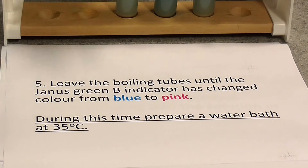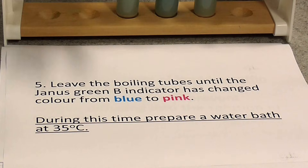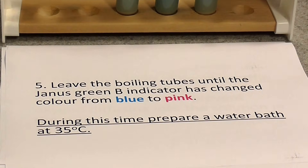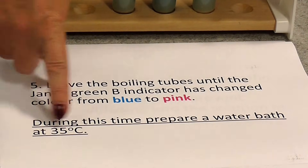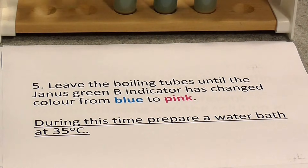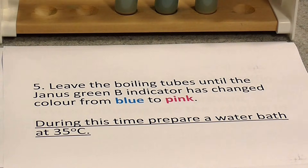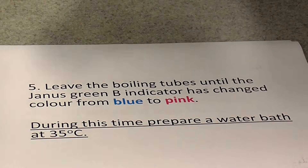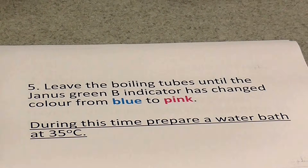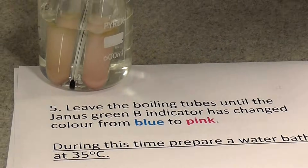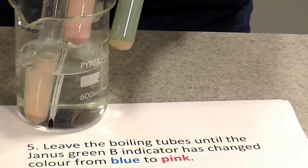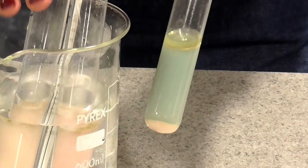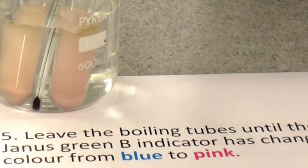This will take quite a bit of time, but you can speed it up by putting the tubes in a water bath at 35 degrees if you already have one prepared. I've actually done this step earlier, and after a period of time you'll see the colour change. You can see the Janus Green indicator has changed to pink, showing that we've got anaerobic conditions in these tubes.